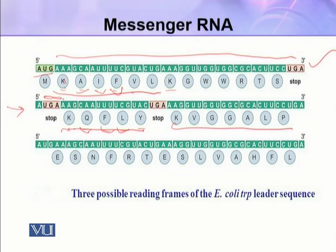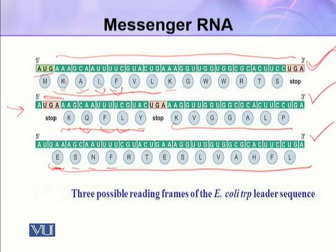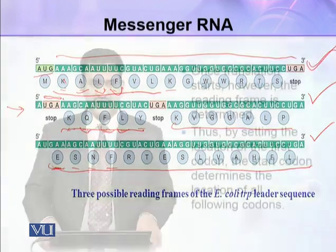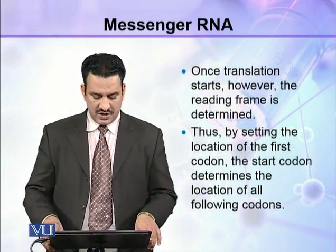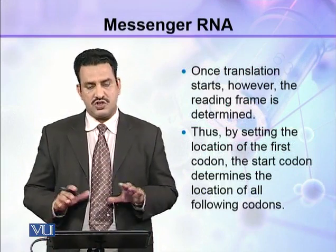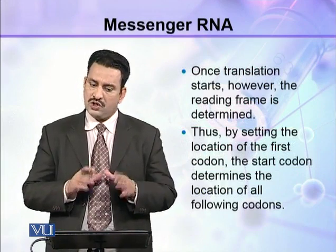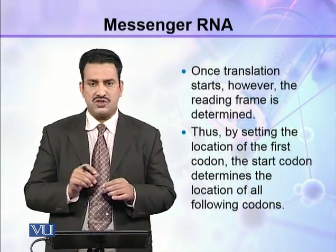In the third reading frame, protein synthesis continues and no stop codon has appeared yet. The amino acid sequence here is E, S, N, F — completely different from both previous frames. So these are three different possible reading frames that can be read from the same mRNA, resulting in different types of proteins. Once translation begins, the reading frame is determined and does not change.